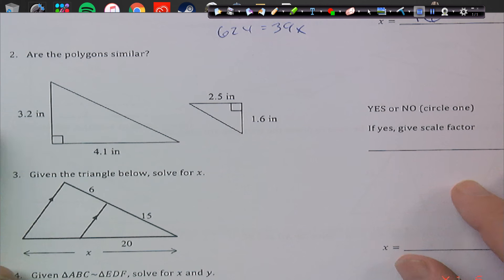Alright, are the polygons similar? Now there's two things that need to be true for similarity. One, we need to have all our angles to be congruent, and two, we need our sides to be proportionate. Okay, since we're dealing with a 90 degree here, we can go ahead and check to see if sides are proportionate.